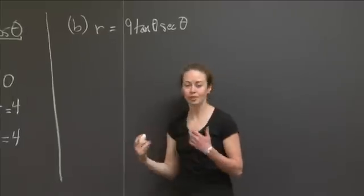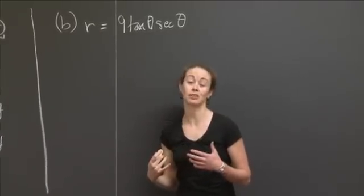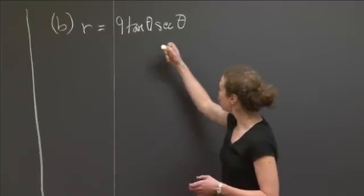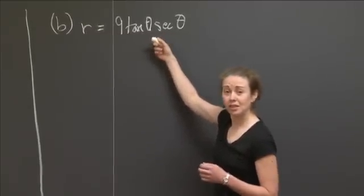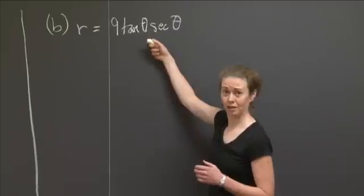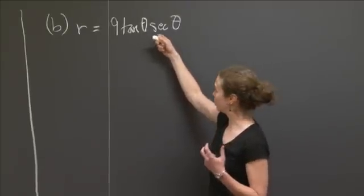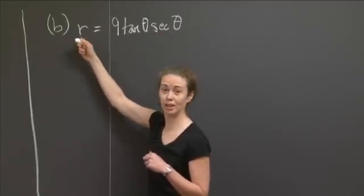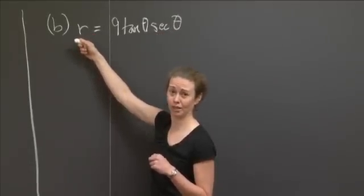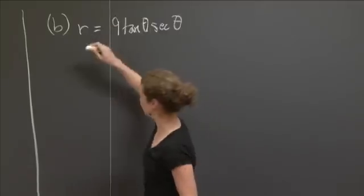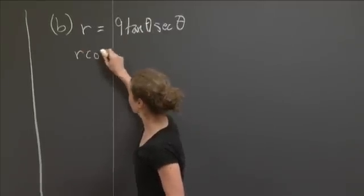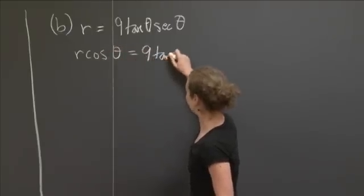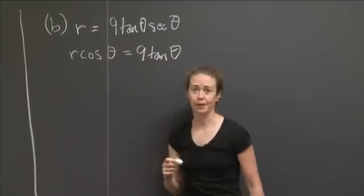OK. So let's look at this. Now, there's some information buried in here in terms of x, y coordinates. And one thing that should stand out to you is, what is sec θ? Secant θ is 1 over cos θ, right? And if we have 1 over cos θ over here, we can multiply both sides by cos θ. And we get an r cos θ over here. So I'm going to write that down, that this actually is in the same, this is the same as r cos θ = 9 tan θ, right?